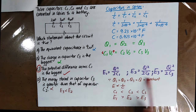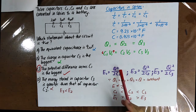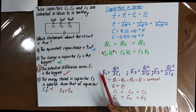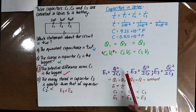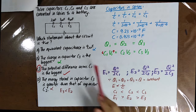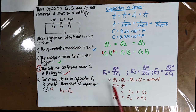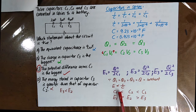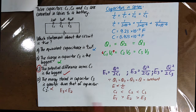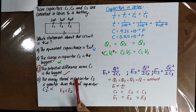For energy, you have the formula E equals Q² over 2C, which equals ½CV², which also equals ½QV. Using E equals Q² over 2C, since Q is constant for all capacitors in series, the larger the C, the smaller the E. So when C1 is less than C2, which is less than C3, then E1 is greater than E2, which is greater than E3. Therefore, the energy stored in capacitor C3 is smaller than that of capacitor C2.